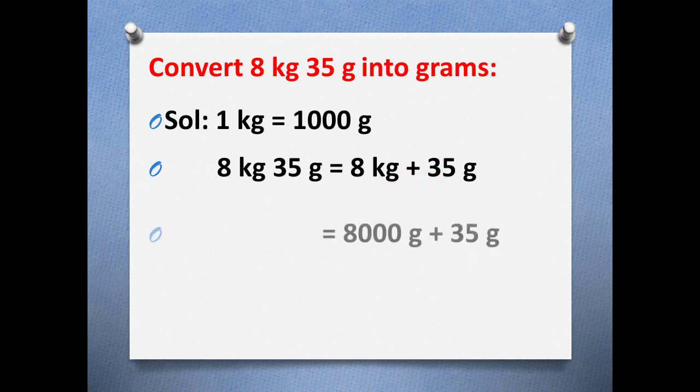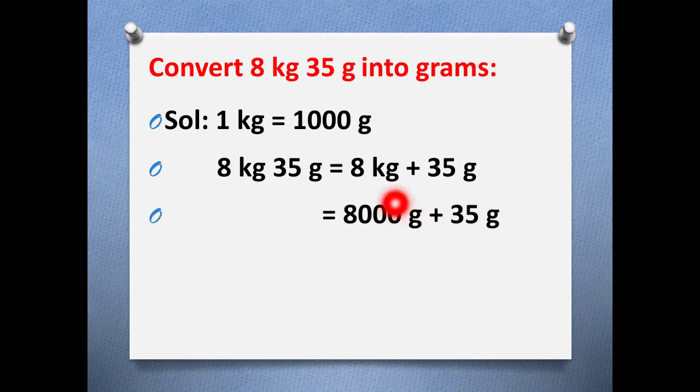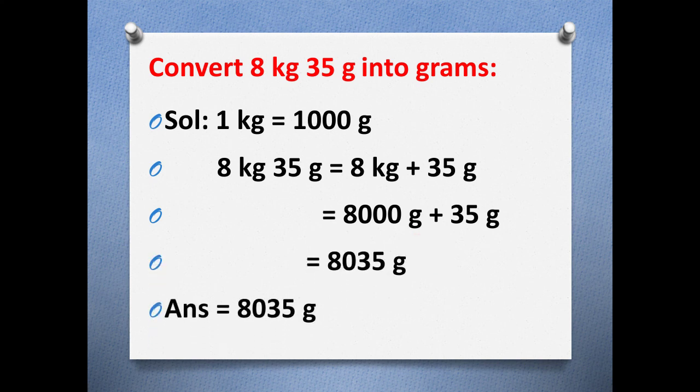Then next we will mention that 8 kg has 8000 grams plus 35 grams. Now after adding we get 8035 grams. So 8 kg 35 grams is equal to 8035 grams.